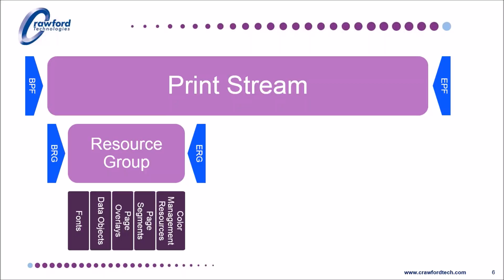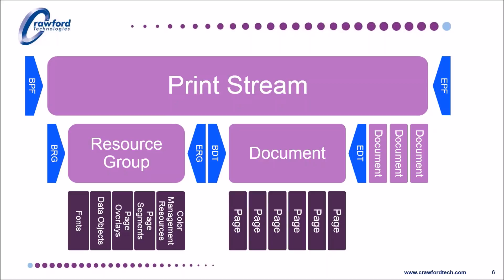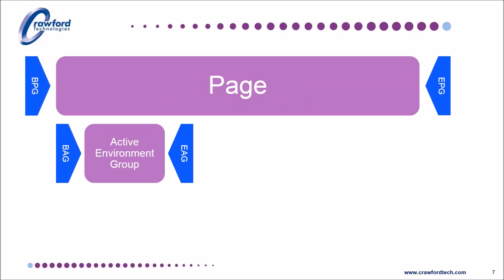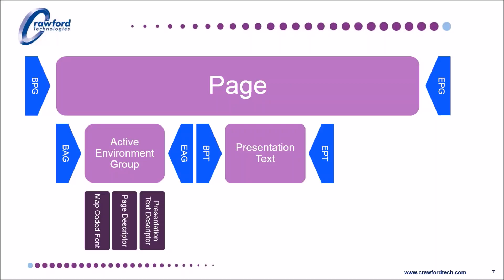AFP supports a number of different resource groups that serve different purposes and apply at different points within the file, each with their own name. Following the resource group, we have the documents within the file. Note that AFP, unlike PDF for example, supports document construction as standard, and the file can contain multiple documents. Metadata can be associated at the document and the page level. At the page level we find additional resources and layout instructions within environment groups and page segments and overlays. It's also at the page level where all the drawing commands are placed — including the placement of text, position of graphic objects, barcodes, additional document types such as embedding a PDF file, and anything else that appears on the paper or within the file.